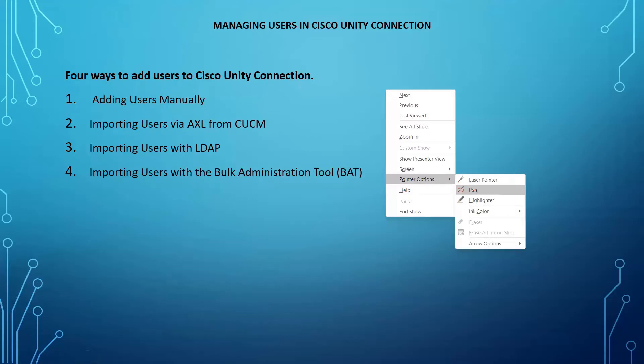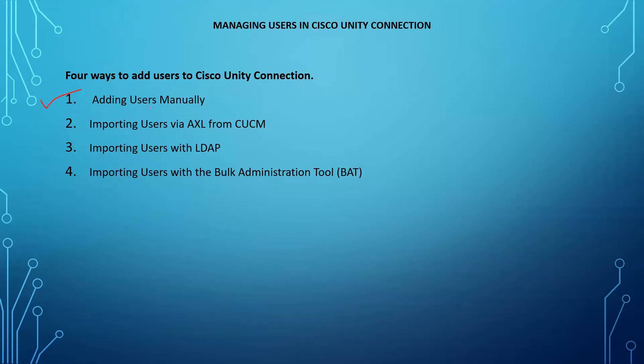The first way is to add users manually — you just go to Cisco Unity Connection and add a user. There are two types: a user with a mailbox and a user without a mailbox. A user with a mailbox would be like an end user, and a user without a mailbox could be an administrator. For example, if no one wants to give you full admin rights on Cisco Unity Connection, they will create a user without a mailbox and provide a specific role to that user so you can log in and manage end users.